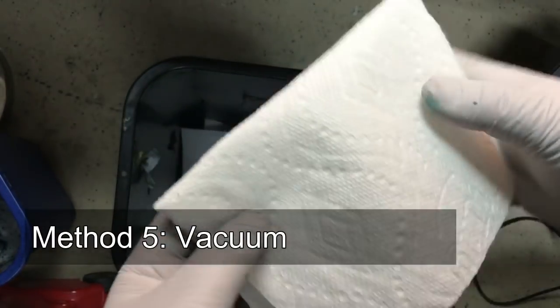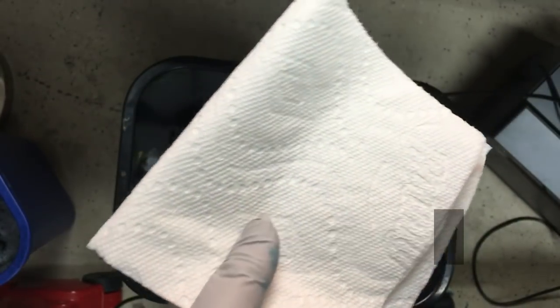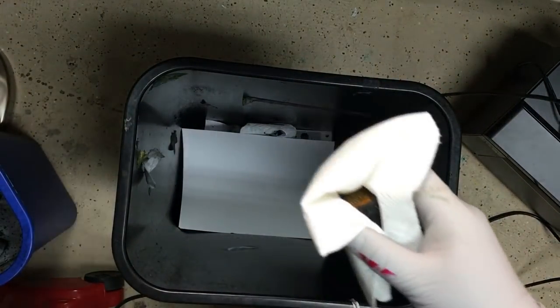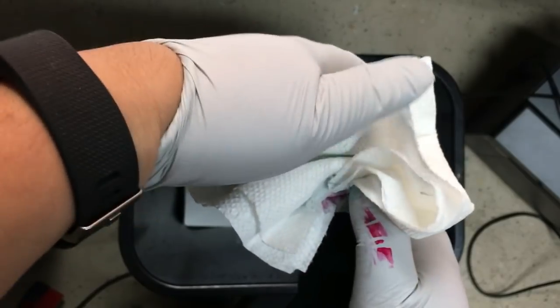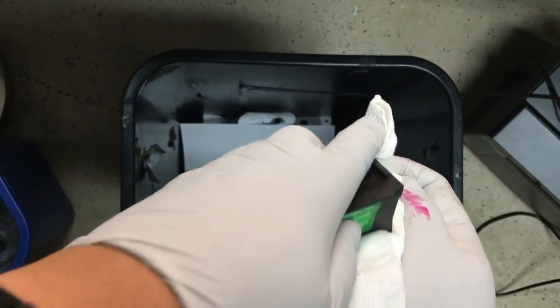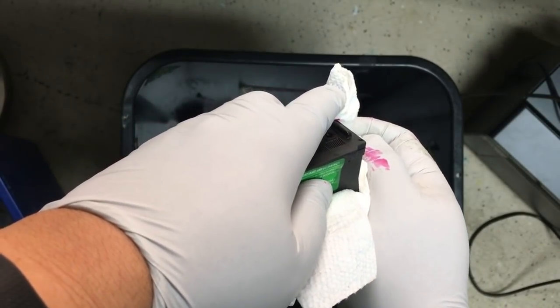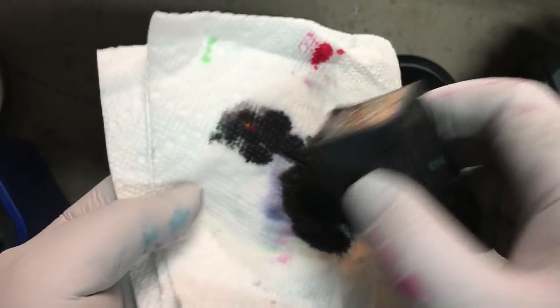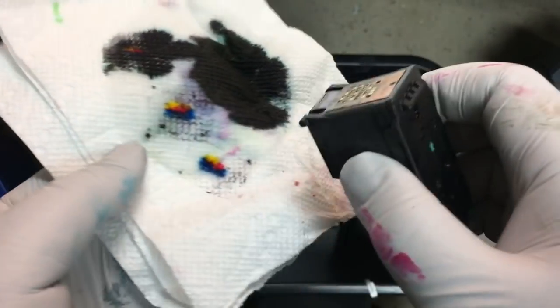Now I'm going to do the vacuum. And I'm going to fold the paper towel, put some water on it, and wrap it around the cartridge. Then you just do a little dab on the paper and you should be able to see all the three colors coming out.